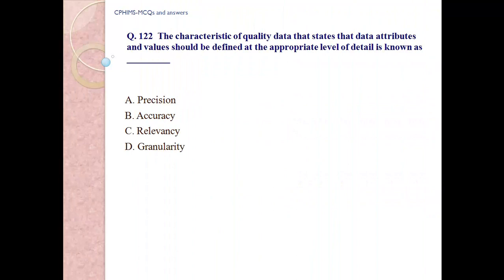Question number 122: The characteristic of quality data states that data attributes and values should be defined at the appropriate level of detail. This is known as — A. precision. B. accuracy. C. relevancy. D. granularity.